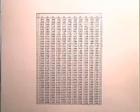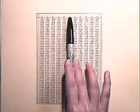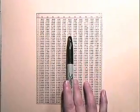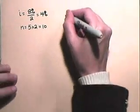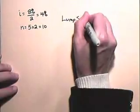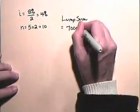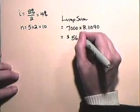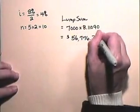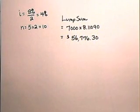And here again in this table, we will go across to the column headed 4%. We will go down to the row with 10 periods, and we will find this value is 8.11090. So the lump sum, which is the present value of the annuity, is $7,000 times 8.11090, or $56,776.30. So we know that $56,776.30 is the lump sum, which, when deposited today, will meet this need of $7,000 every six months for five years.